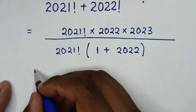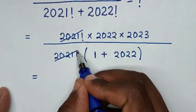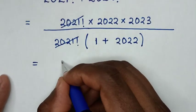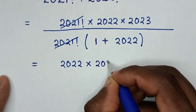In the next step, it will be equal to - to simplify, this 2021 factorial will cancel with this one. So it will be 2022 times 2023.